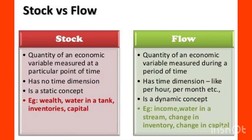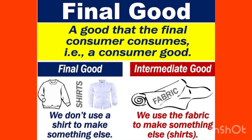In the flow category, examples include exports, salary, gross domestic savings, change in money supply, and capital formation. The importance of flow is that it relates to changes over a period, whereas stock refers to a position at a given point.